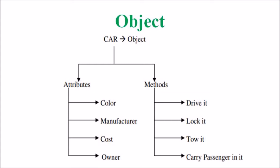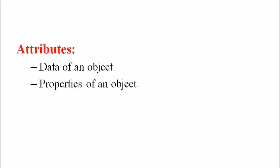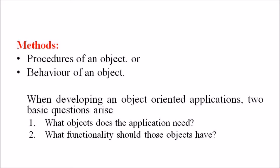When it comes to the method or function, the different methods of a car are driving a car, locking a car, towing a car, carrying passengers, etc. So the attributes mean the data and properties of an object, while the methods are the procedures or behavior of an object.